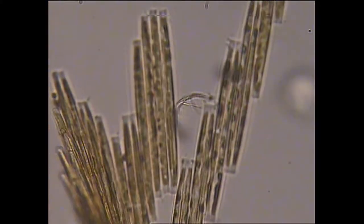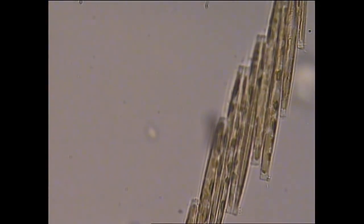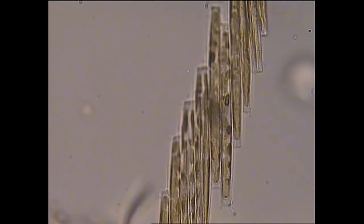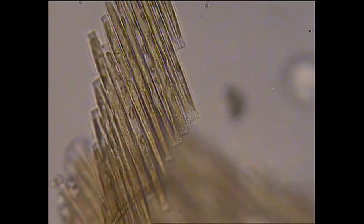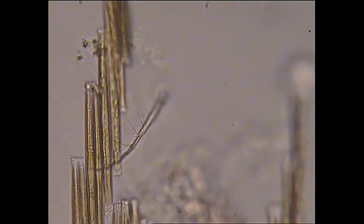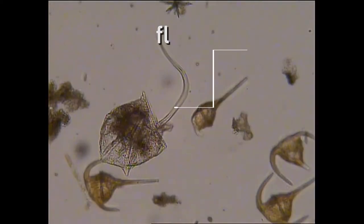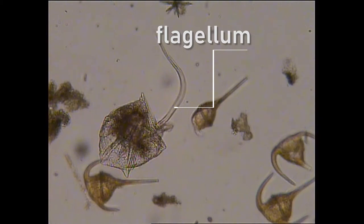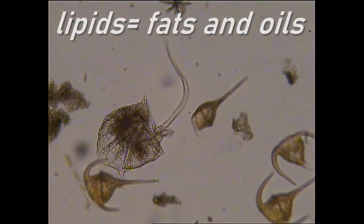Being plants, phytoplankton needs sunlight to grow and survive, so they need to be near the surface during the day. To achieve this they have special features on their body such as spikes or a small whip-like tail called a flagellum, or they produce lipids inside their body to help them float.